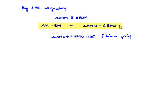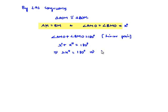Let each angle be equal to X degrees. Then angle AMO plus angle BMO gives X plus X equals 180 degrees, which implies 2X equals 180 degrees, and therefore X equals 90 degrees. So angle AMO is equal to angle BMO is equal to 90 degrees.